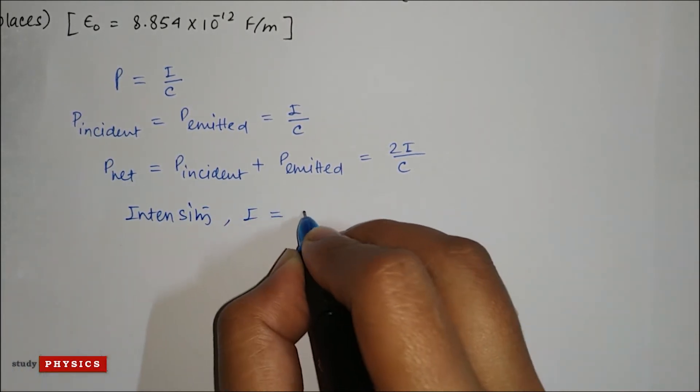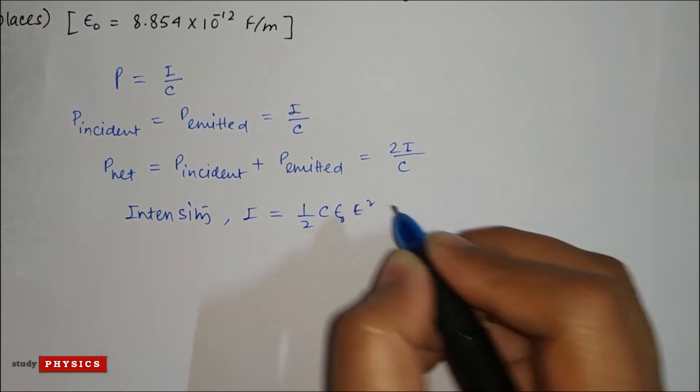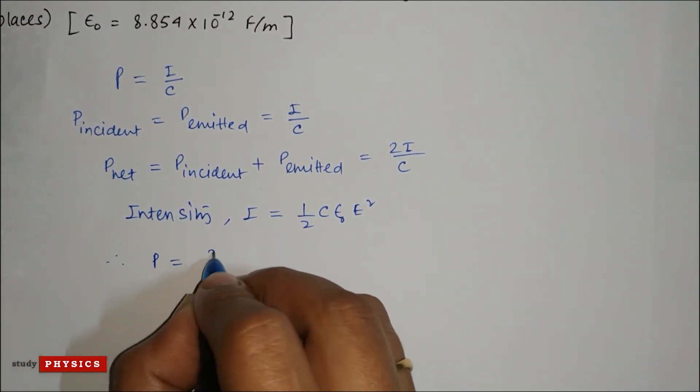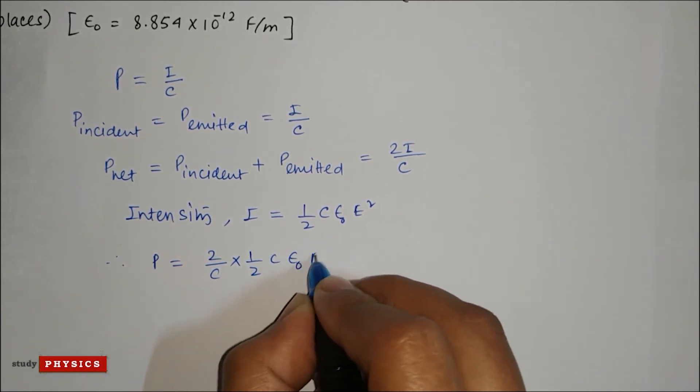I is half c epsilon naught e squared. So P is 2 divided by c into half c epsilon naught e squared.